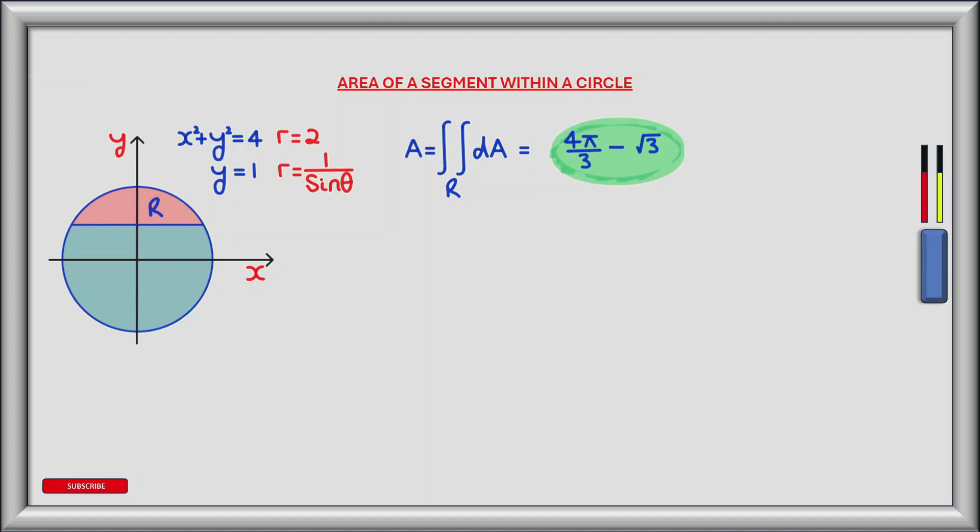We now have a final answer for the area shown in red, which equals 4 pi divided by 3 minus the square root of 3. Now let's move on to verifying this solution.